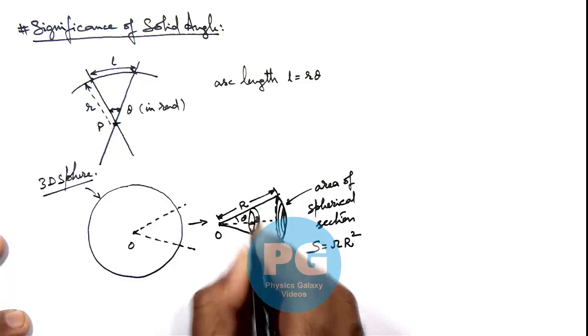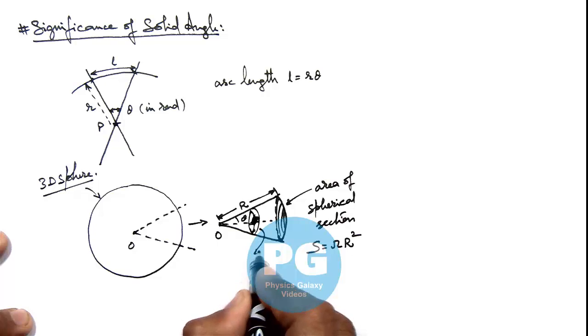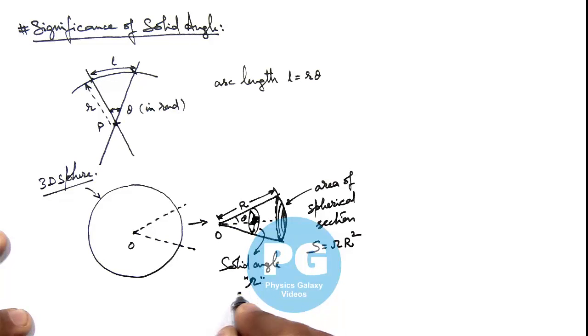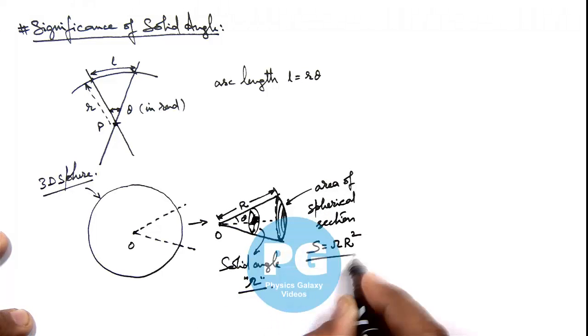Enclosed by this conical surface. So if here solid angle is omega, then in this situation directly the area of the spherical section is given as omega r square.